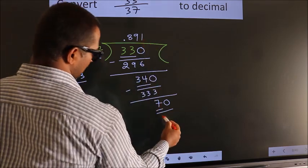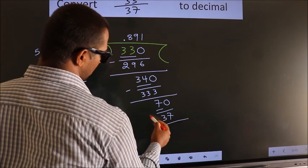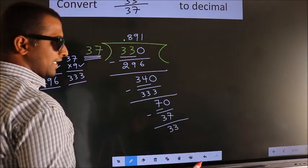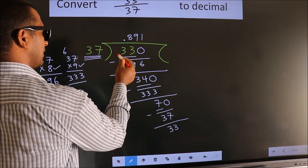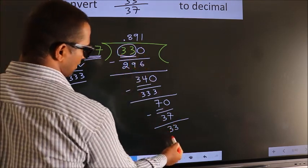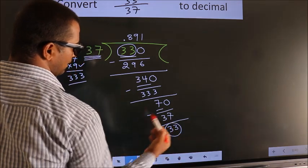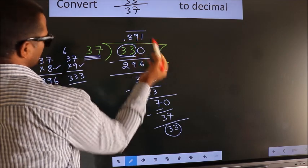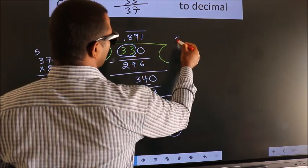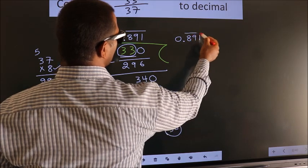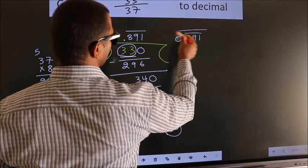37 once is 37. Now we subtract. We get 33. Here you observe we had 33 here and we got 33 again. That means we get a bar on these three numbers.